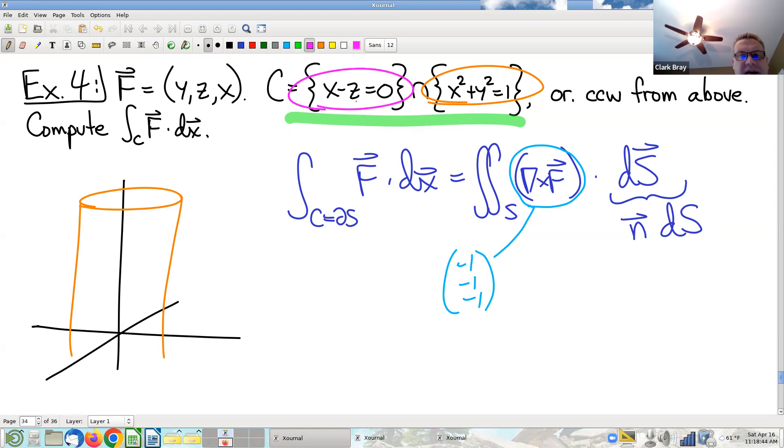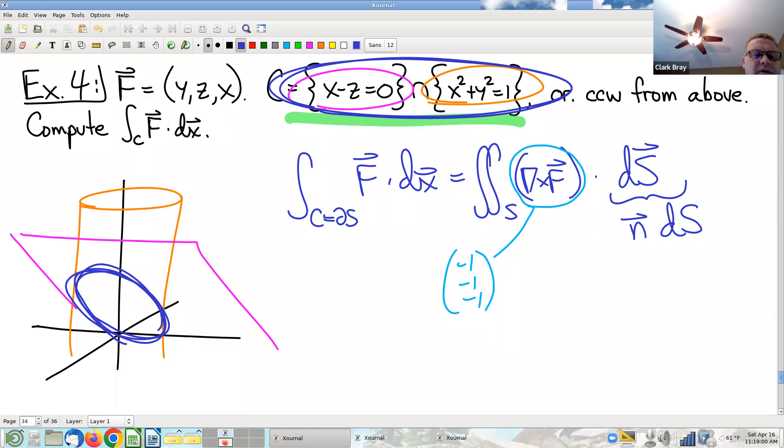Let me draw a picture now of my thing here. I've got as before this cylinder intersecting with this plane. X minus Z is zero. The intersection here, that intersection is an ellipse, something like that. Point being when I get my new surface, this new surface. And I want to understand its normal vector. I want to understand its unit normal vector.